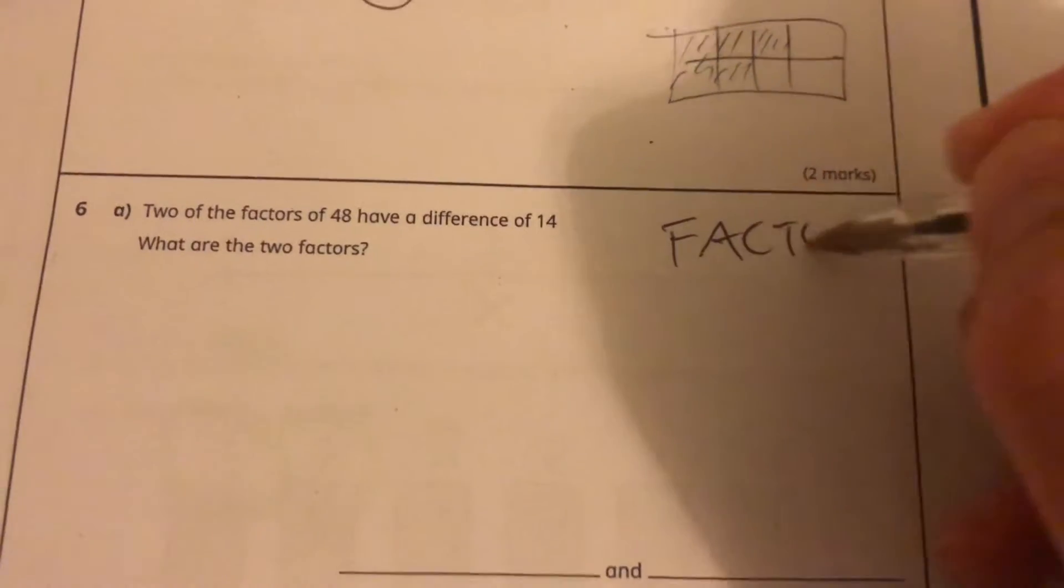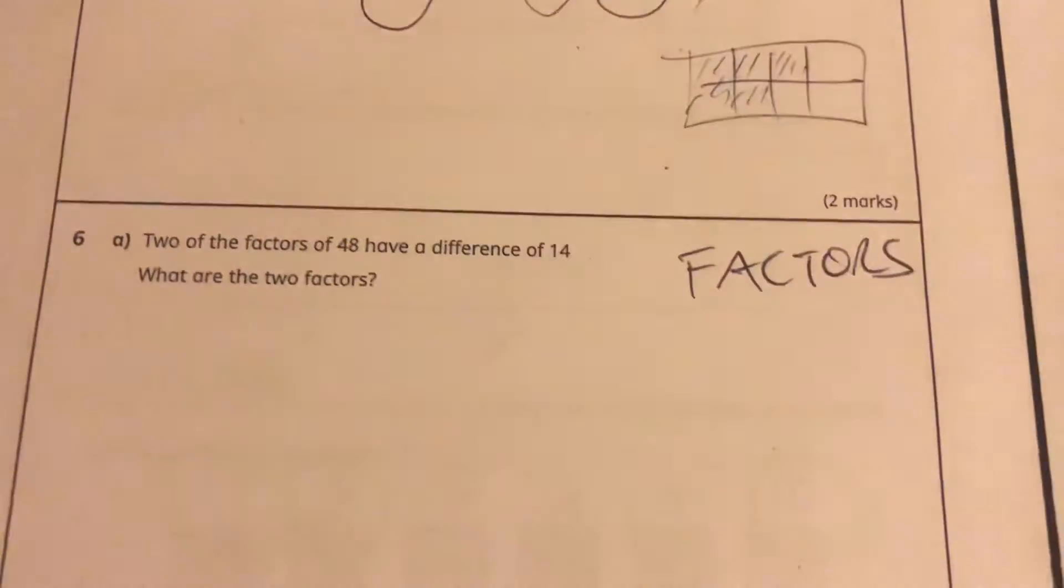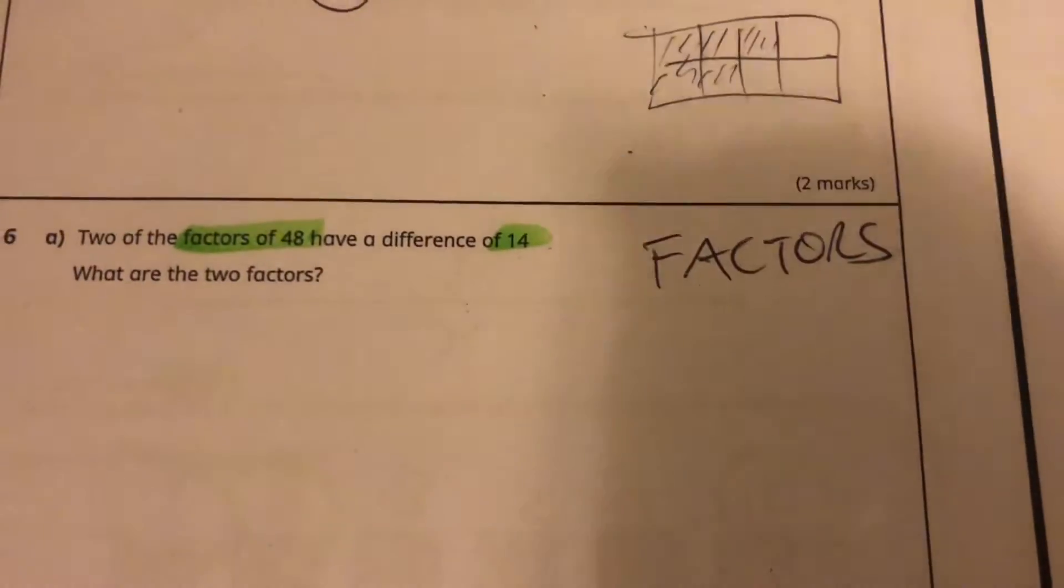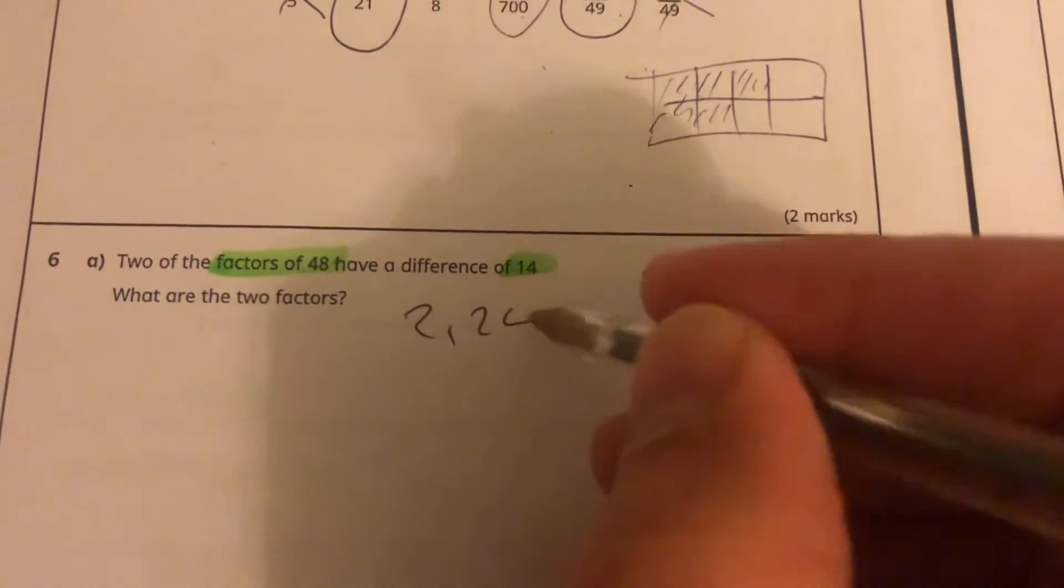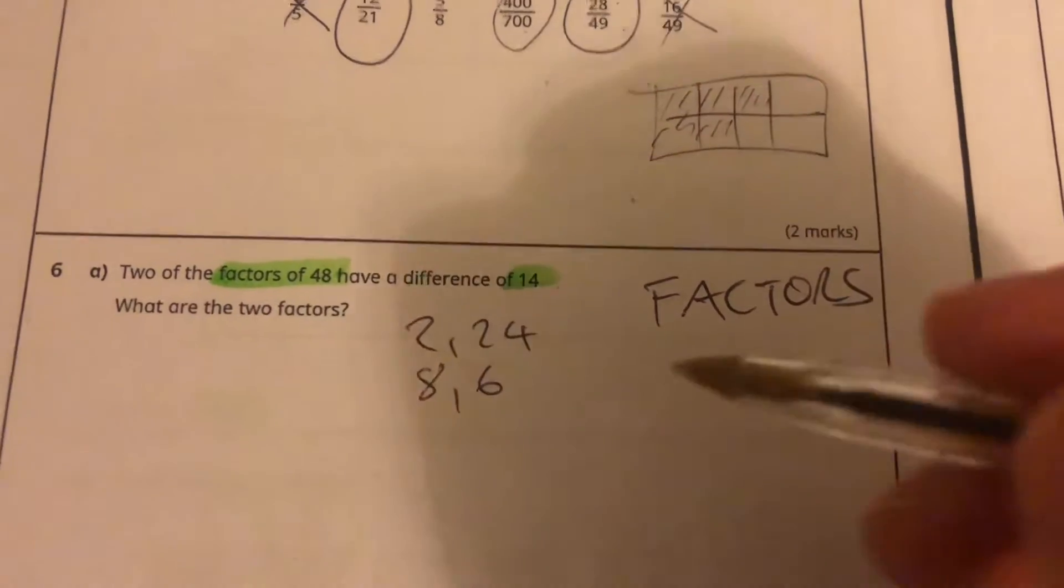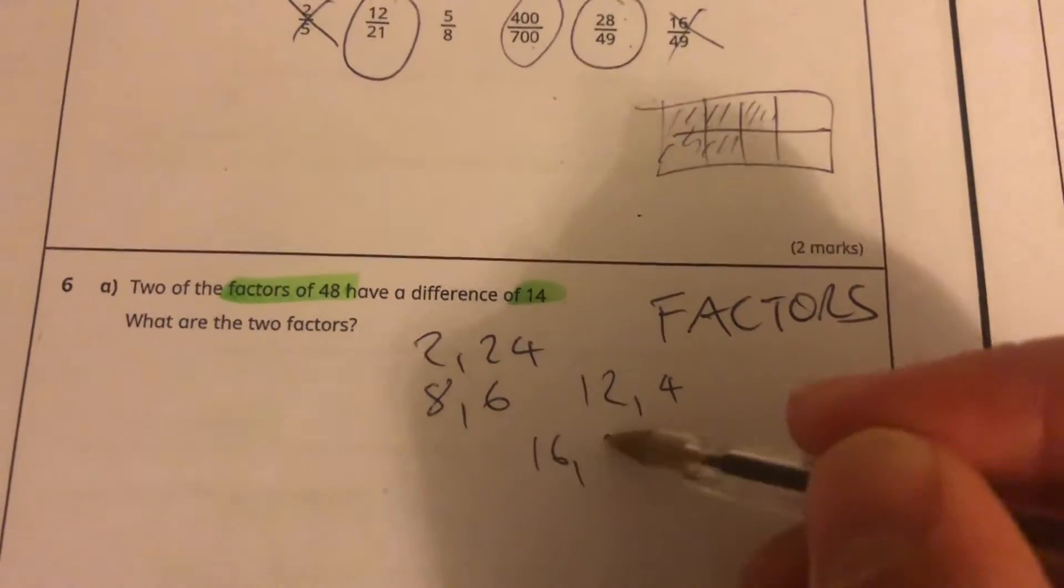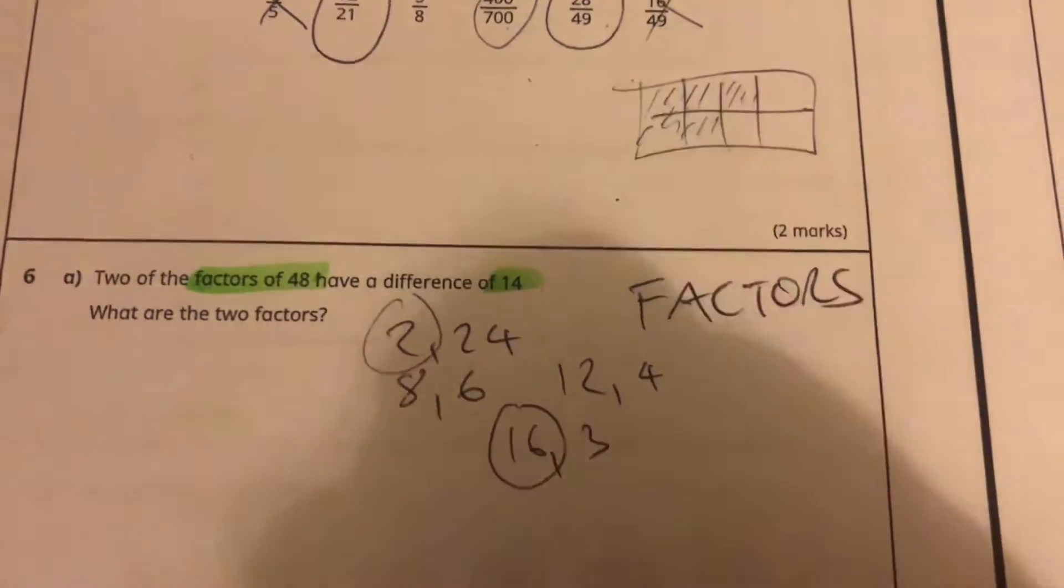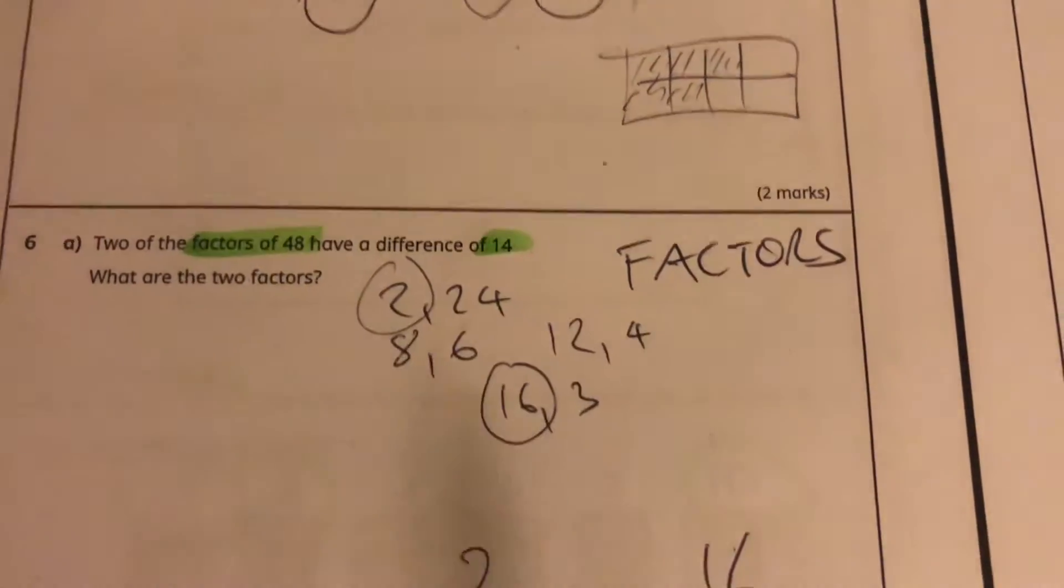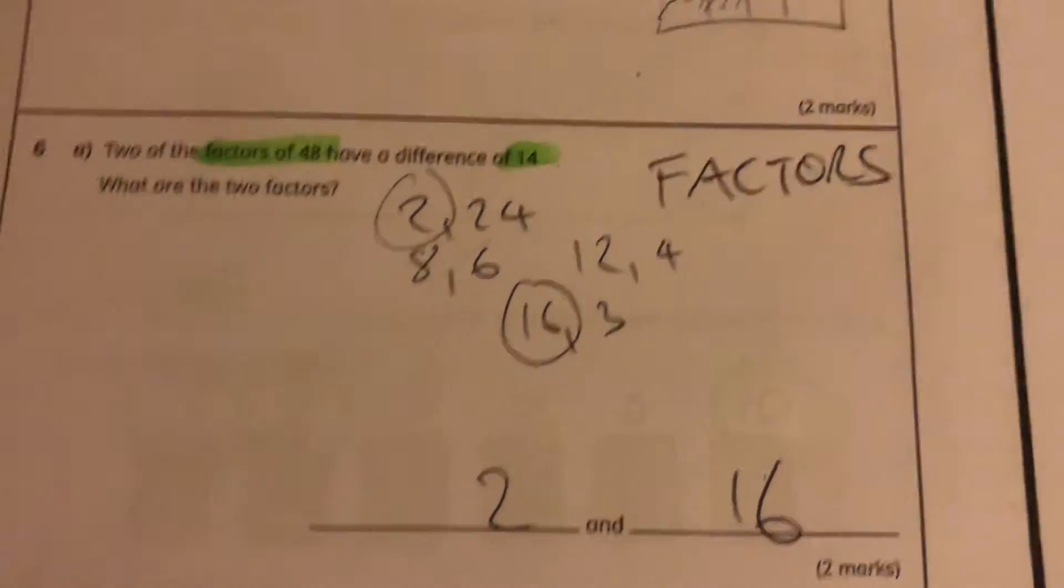So I'm going to go on to some factors here. Two of the factors of 48 have a difference of 14. We're going to think about what are the factors of 48 that have a difference of 14. 2 times 24, 48 is 8 and 6, 12 and 4, 16 and 3. There I can see 2 and 16. They didn't say they had to be factor pairs, just 2 and 16 have a difference of 14.